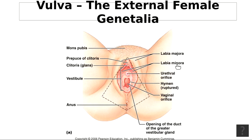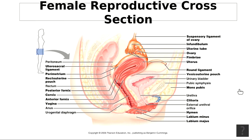The clitoris — C-L-I-T-O-R-I-S — is a small cylindrical mass of erectile tissue covered by a prepuce, and is homologous to the penis of the male. Looking at the picture, we can see the mons pubis, labia majora, labia minora, and the clitoris — which is the female erectile tissue.